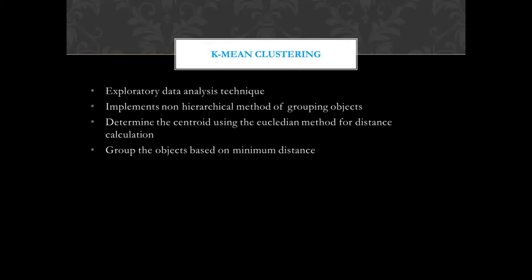What is k-means clustering? There are mainly four key points. First, it is an exploratory data analysis technique that analyzes and explores the complete dataset. Second, it implements a non-hierarchical method of grouping objects. Third, we have to determine the centroids and the distance from each centroid to each data point based on Euclidean distance. Finally, we group objects based on the minimum distance.